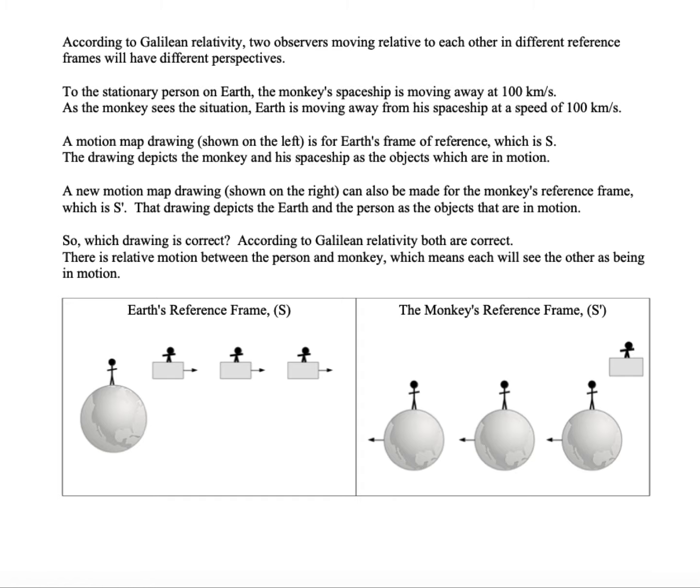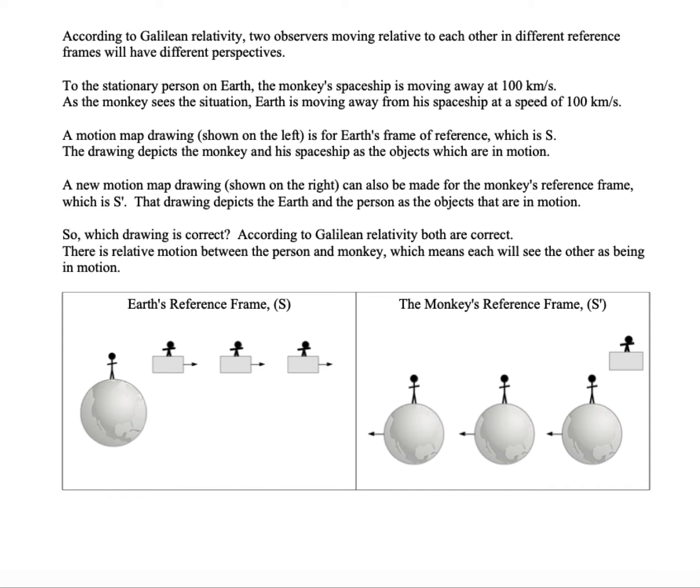Okay, let's try the next one, then. So, according to Galilean relativity, two observers moving relative to each other in different reference frames will have different perspectives. And this is a drawing of those different perspectives. On the left, we have Earth's reference frame. That's your reference frame, where you're not moving, and the monkey's moving relative to you.